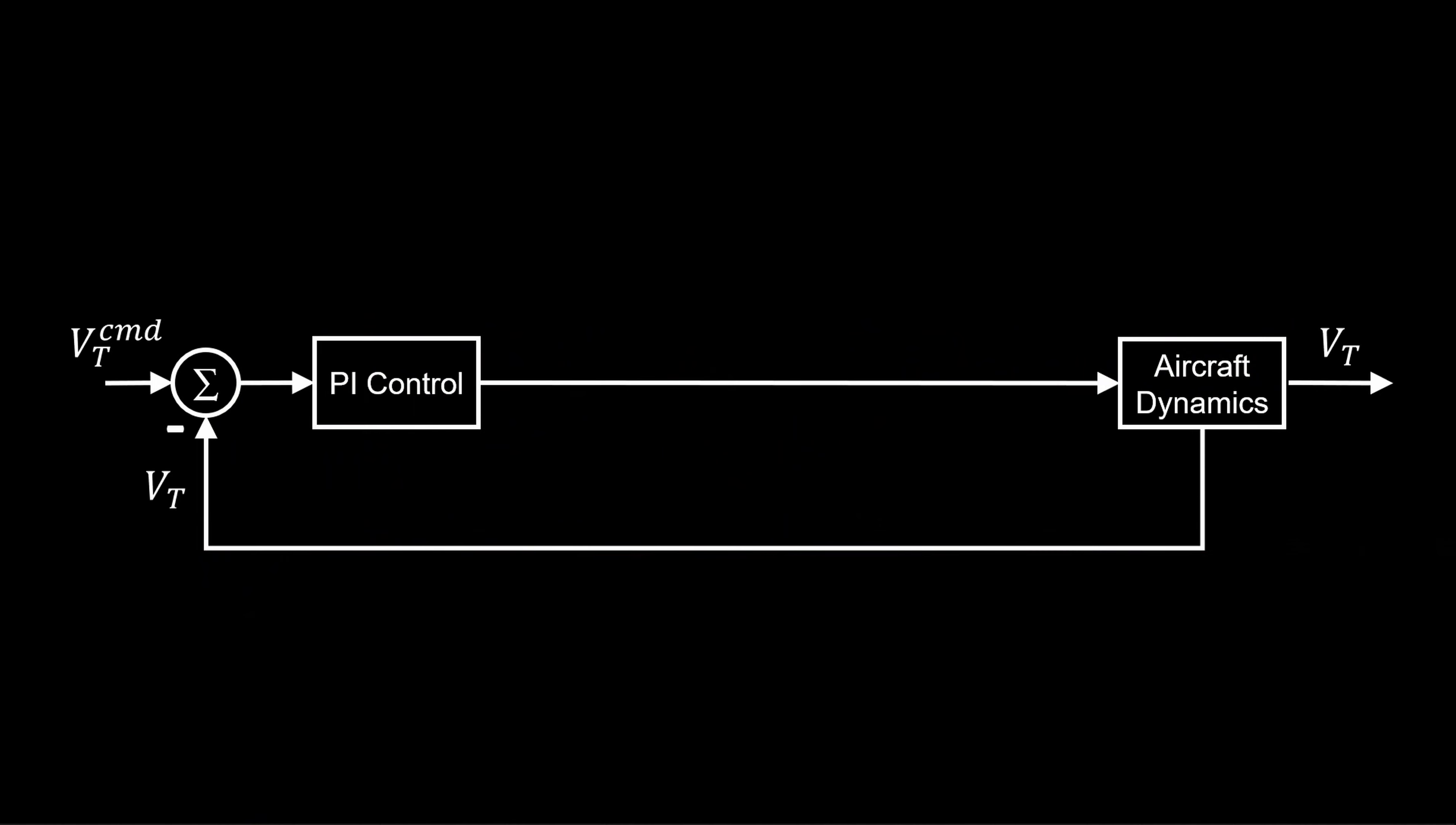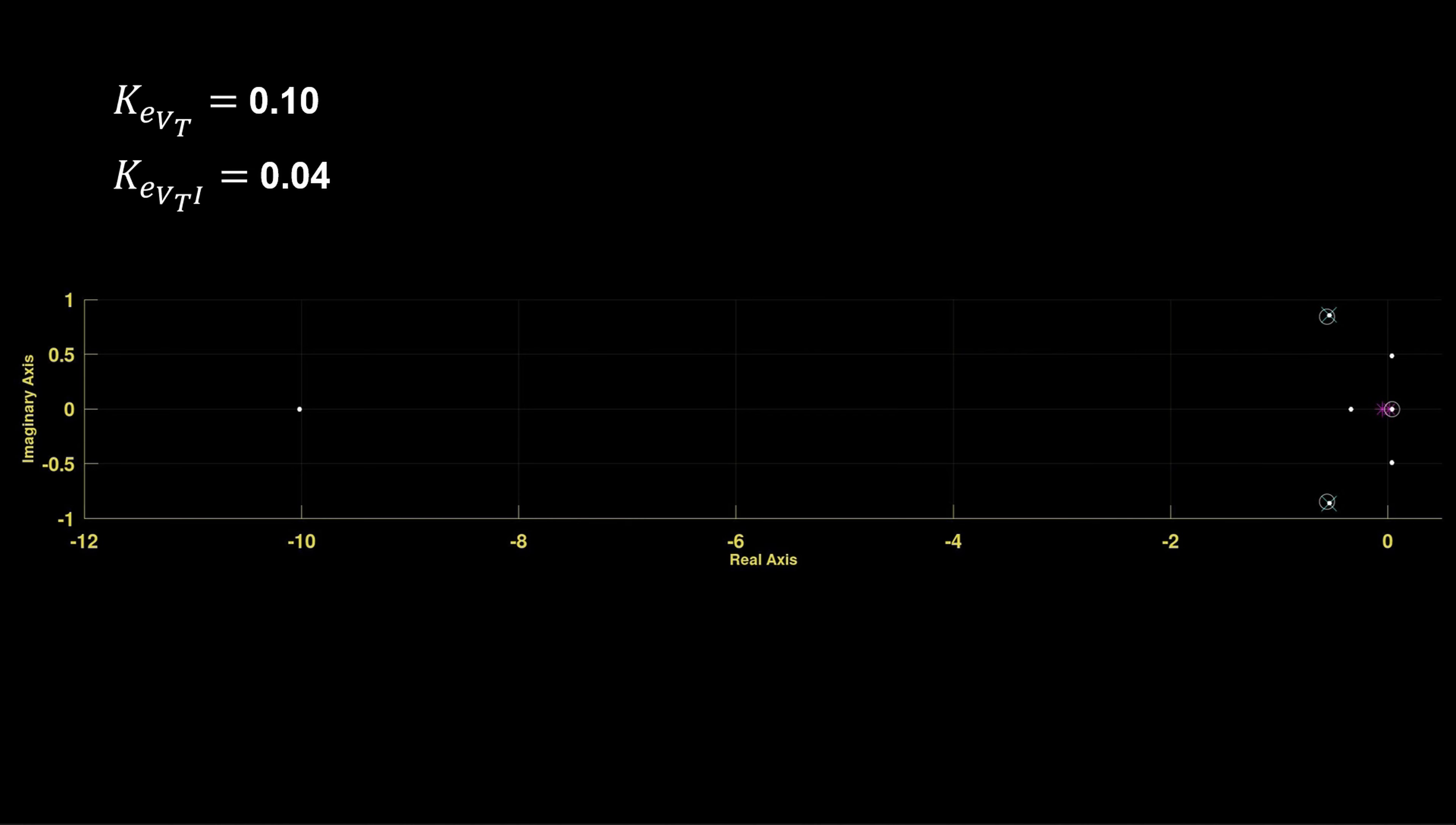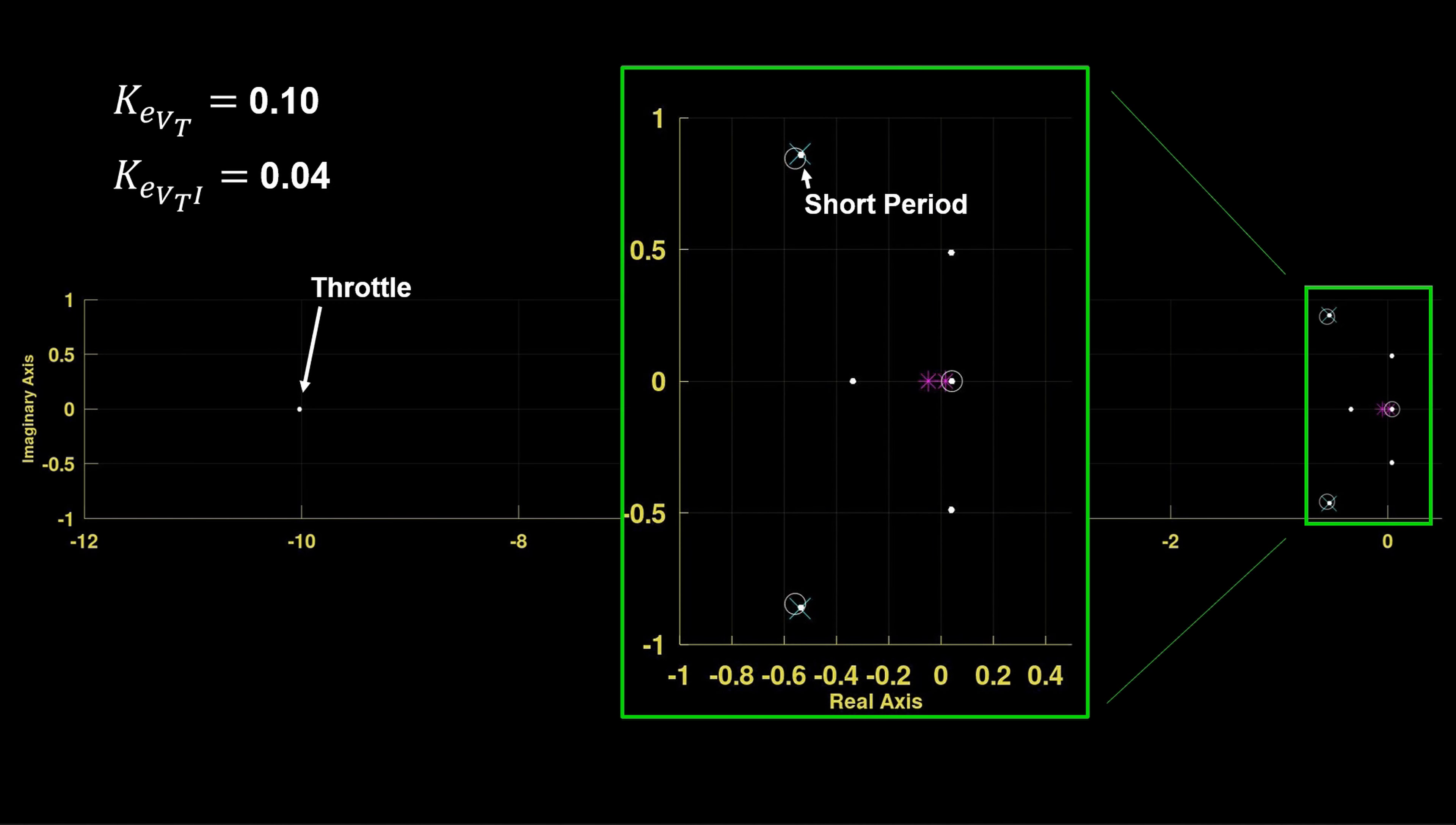We explored things without the throttle and engine. Now we include them. Applying the same gains as before, we have the throttle at minus 10. Closer to the origin, we zoom in, and we can see the short period, the engine pole, the pitch angle pole, and the integrator and airspeed as a complex pair. They're in the right half plane. So for these previously tuned gains, with the time delays of the engine and throttle, the system is unstable, and it needs to be retuned.